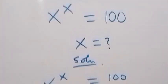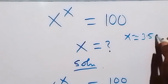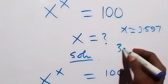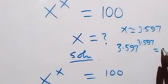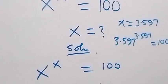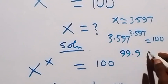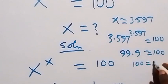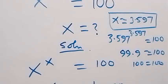We can check from what we have, which is x raised to the power of x equals to 100. Here, x is approximately equal to 3.597. When we substitute, we have 3.597 raised to the power of 3.597. This gives us 99.9, which is approximately equal to 100. Therefore, the value of x approximately equals to 3.597 satisfies this problem.